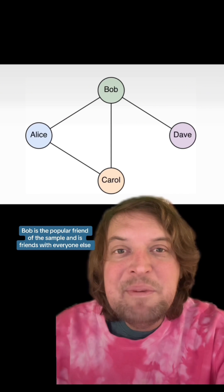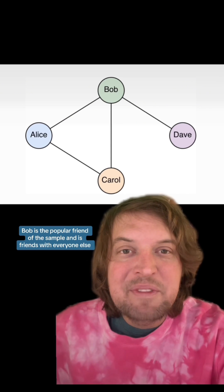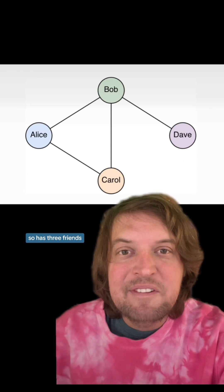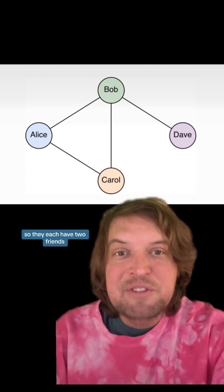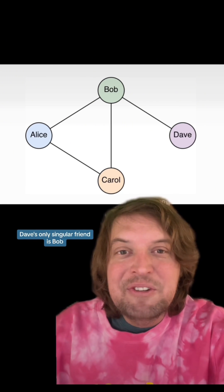Bob is the popular friend in the sample and is friends with everyone else, so he has three friends. Alice and Carol are friends with each other and Bob, so they each have two friends. Dave's only friend is Bob.